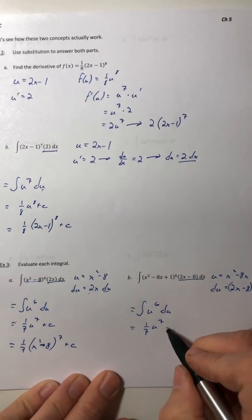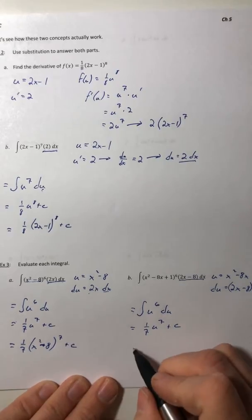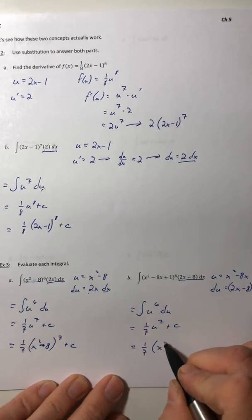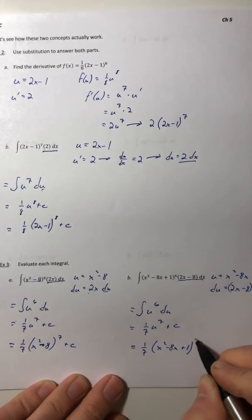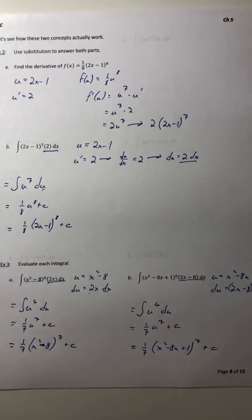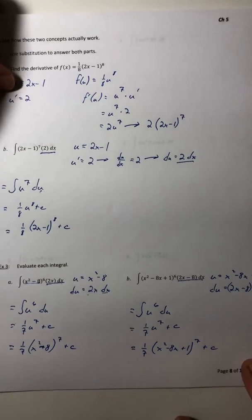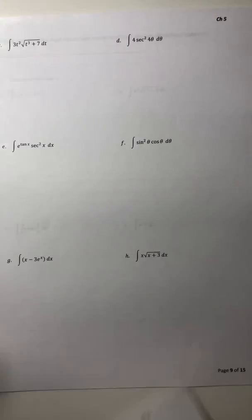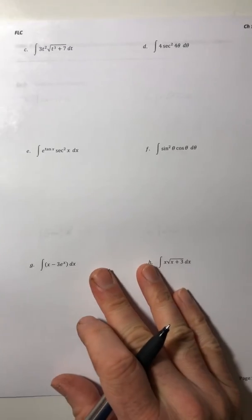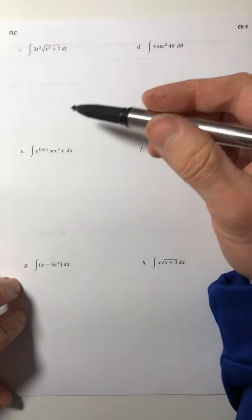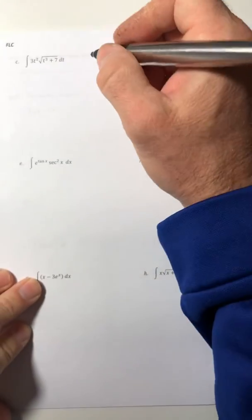So u to the sixth du, integrate that—well hey, we saw that before—one seventh u to the seventh, right there. Switch it back into terms of x. Okay, so there you go, that's really kind of how u-substitutions work. Let's just try some more with some other more complicated functions. Oh boy, now we've got radicals and trig functions and e's, lots of stuff.